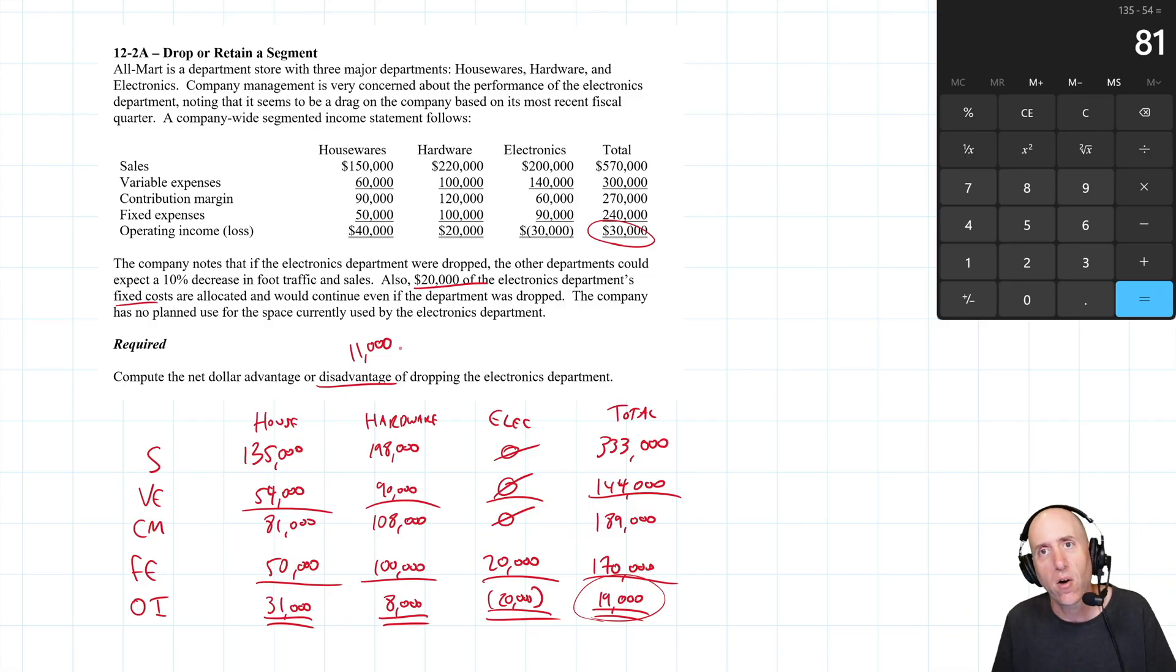Having said all that, the company should consider replacing the department with something new. If they're going to keep the department, they should be saying, how do we get it back on its feet? How do we make sure it becomes profitable again? This isn't like everything's great. No, it's all bad news. But if you drop the department, you will be worse off, at least in the short run, until you figure out what to do with that space. There's a dollar disadvantage of $11,000 to drop the department.